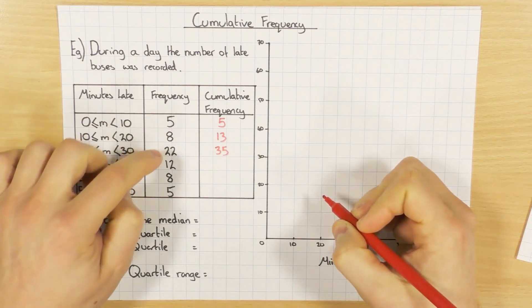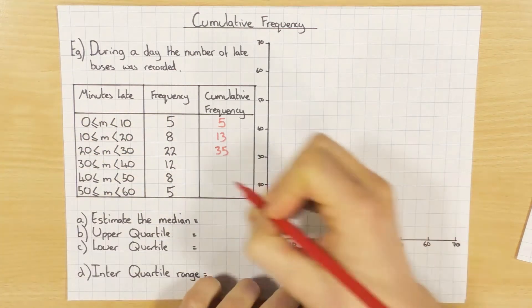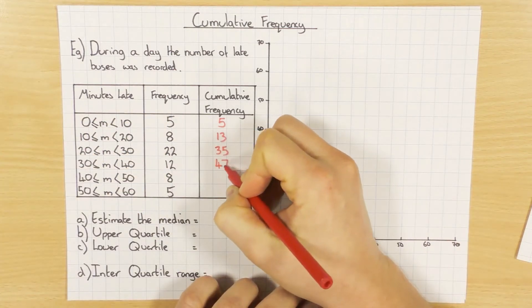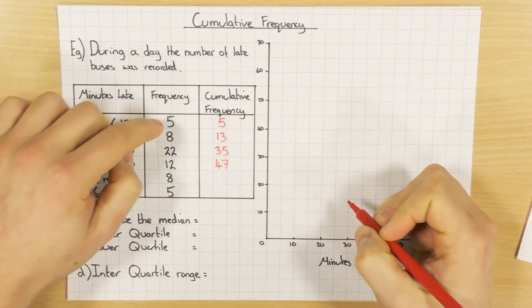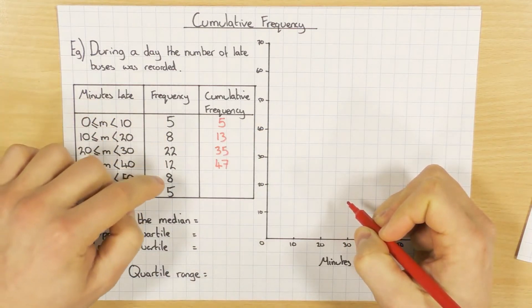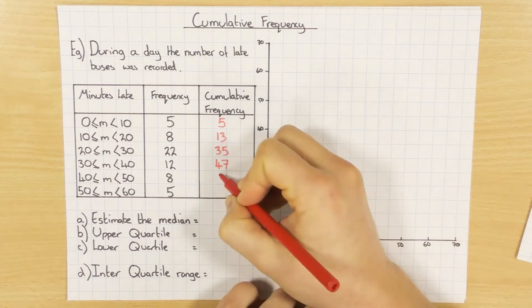And then 5 add 8 add 22 add 12, 47. And you've probably got the right idea now, so 5, 8, 22, 12, and 8, 55.